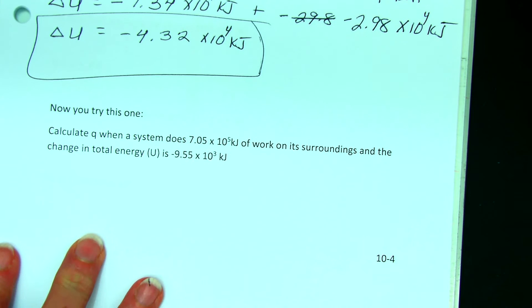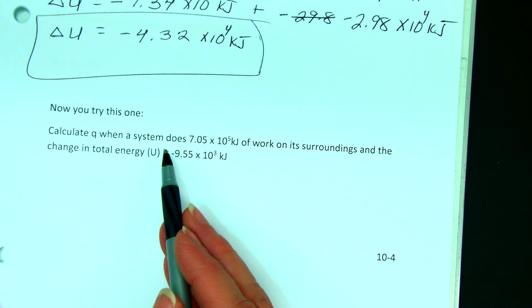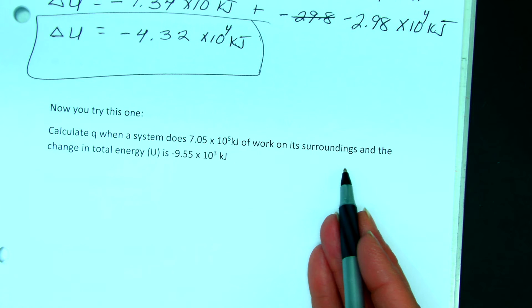Okay, let's look at this problem. Calculate Q, the heat, when the system does 7.05 times 10 to the 5th kilojoules of work on its surroundings.